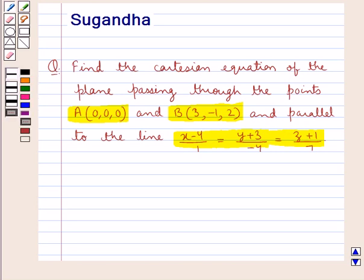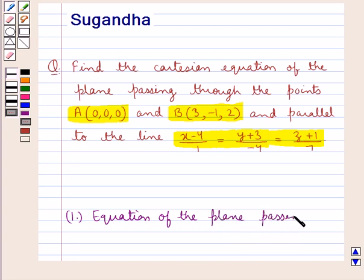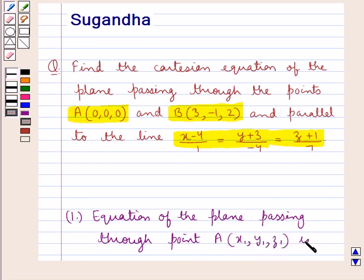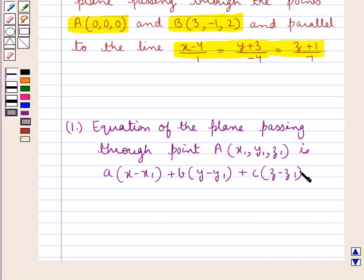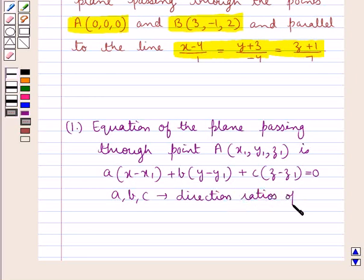Before we move on to the solution, let's first discuss the equation of the plane passing through a point A with coordinates (x1, y1, z1). It is given by A(x − x1) + B(y − y1) + C(z − z1) = 0, where A, B, and C are the direction ratios of the normal to the plane.